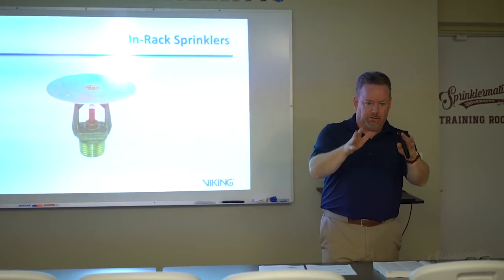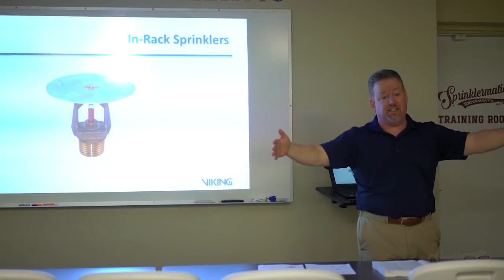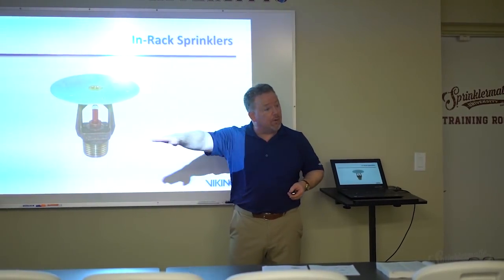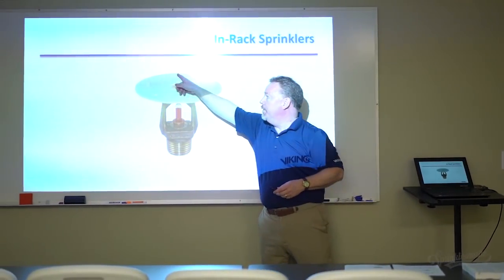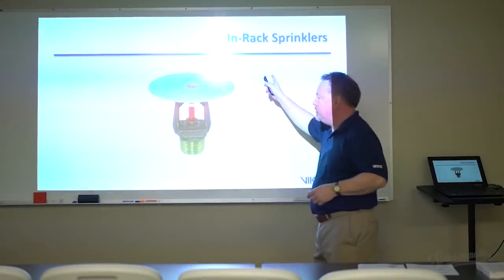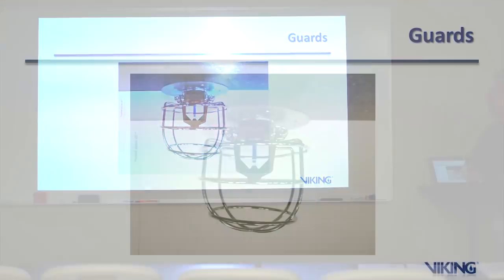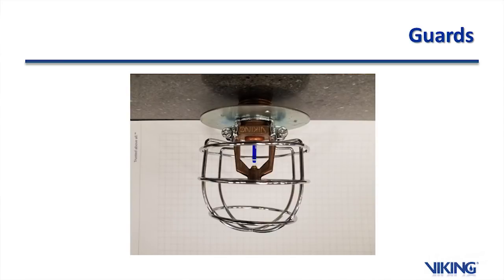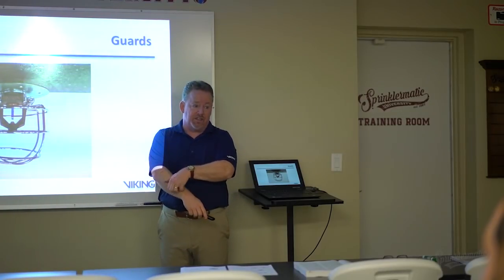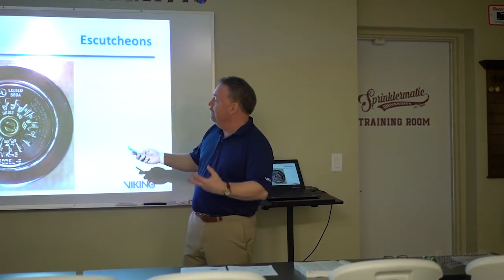In-rack sprinklers are designed for rack storage installations where sprinklers in the racks themselves are required to deliver protection directly to burning commodity within the rack — which can be stacked up to 45 feet or more, making ceiling-only sprinklers insufficient. The disc on an in-rack sprinkler isn't for heat collection; it protects the fusible link from being wetted by spray from sprinklers above, which would delay its operation. In areas where sprinklers could be damaged, a listed guard compatible with that specific sprinkler should be used.